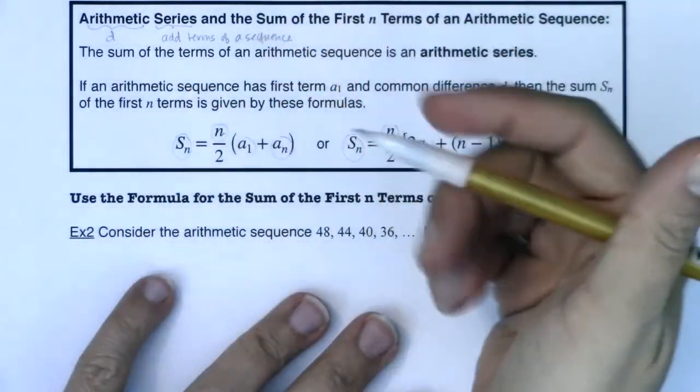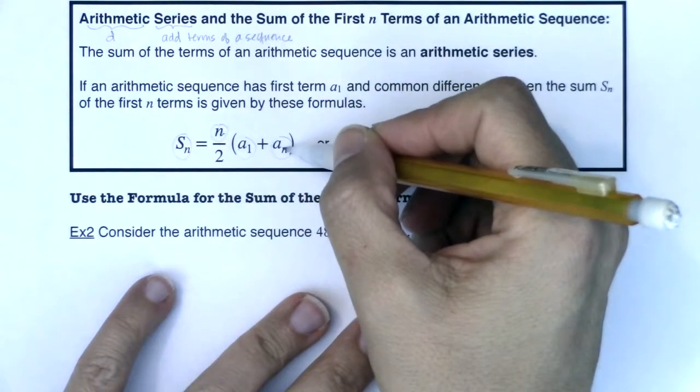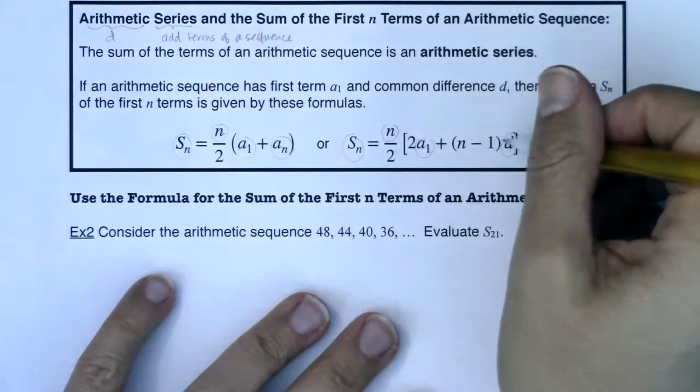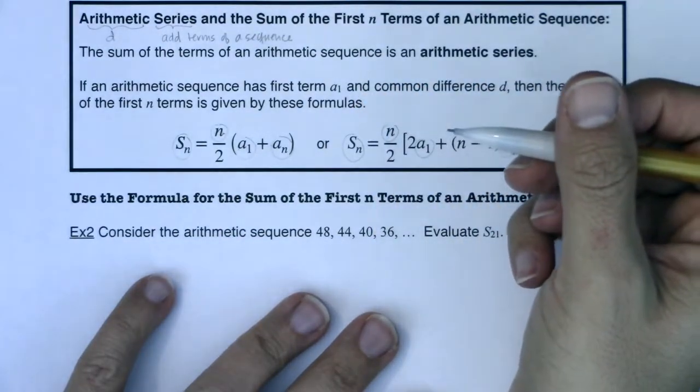And typically what will happen is that you'll be given three of these four variables and asked to solve for the fourth one. I'll be given three of these four variables and I'll be asked to solve for the fourth one.